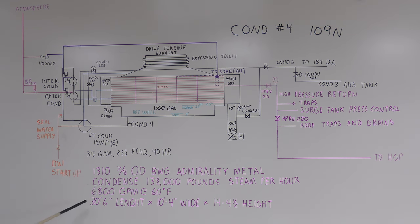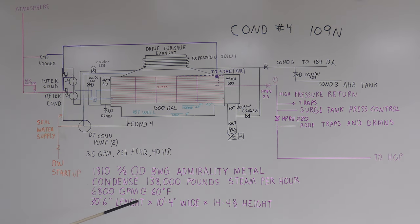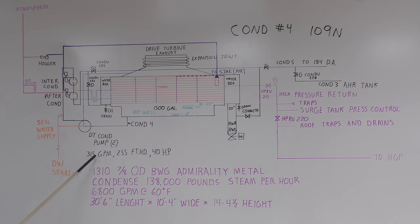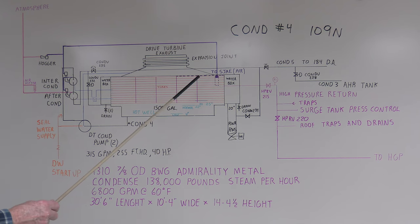Now the condenser is 30 foot 6 inches long, 10 foot 4 inches wide, and 14 foot 4.5 inches high. The dump condensate pump put out about 315 gallons a minute at 255 foot head with a 40 horsepower motor. It had drains on each end for draining, and then there's manways you could get into to check for tube leaks.